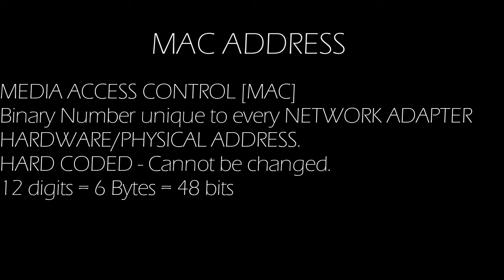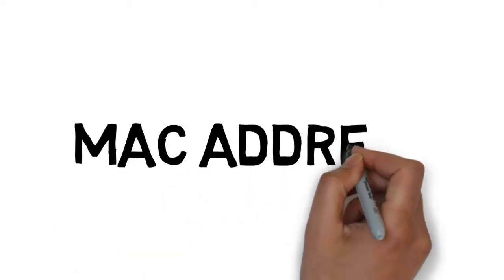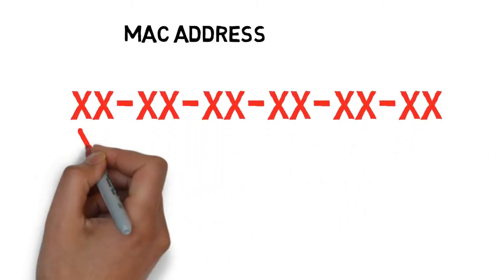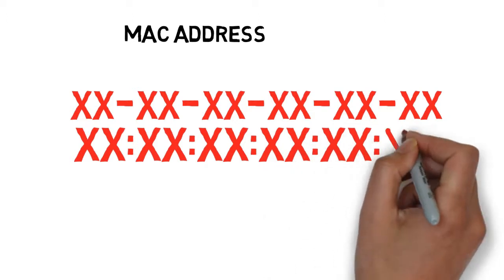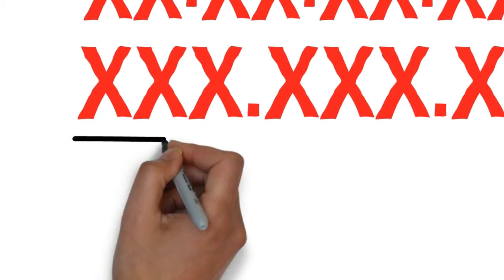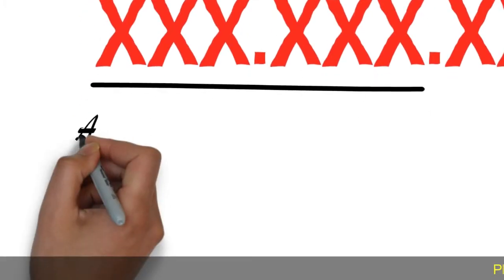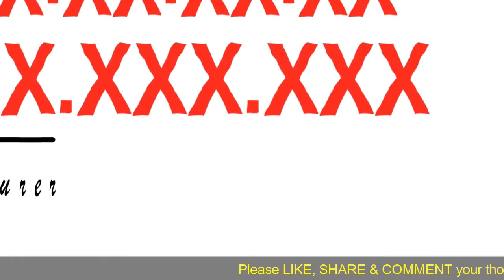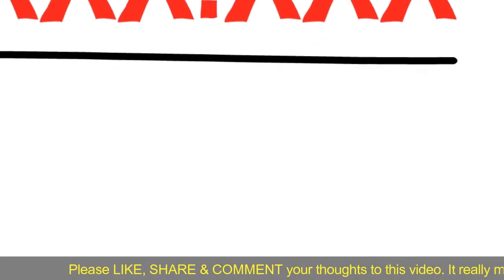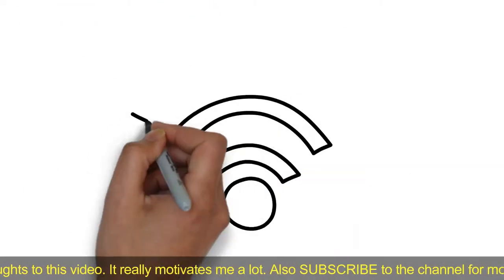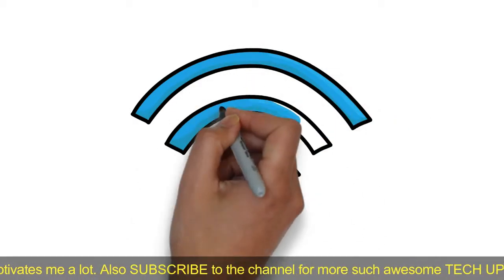By convention, MAC addresses are usually written in standard formats. The leftmost six digits — that is, the first 24 bits — called a prefix, are associated with the adapter manufacturer. The rightmost digits of a MAC address represent an identification number for the specific device among all devices manufactured with the same vendor prefix; each is given its own unique 24-bit number.